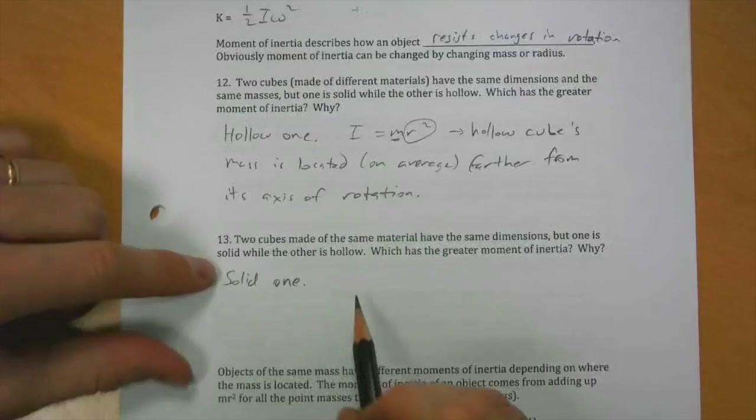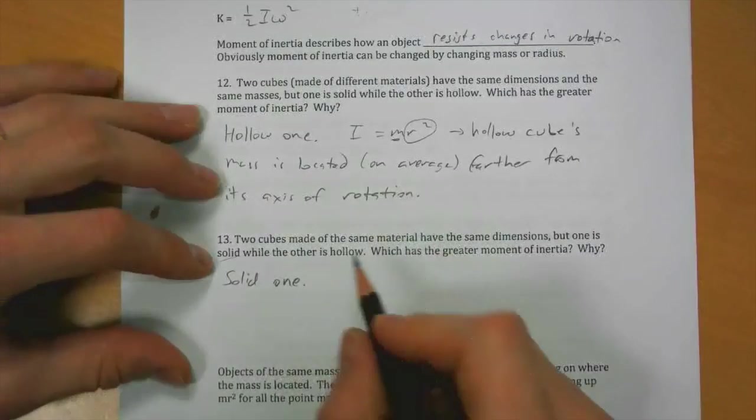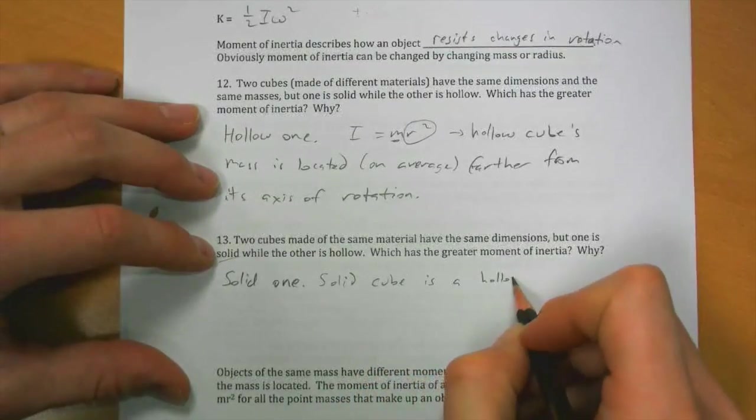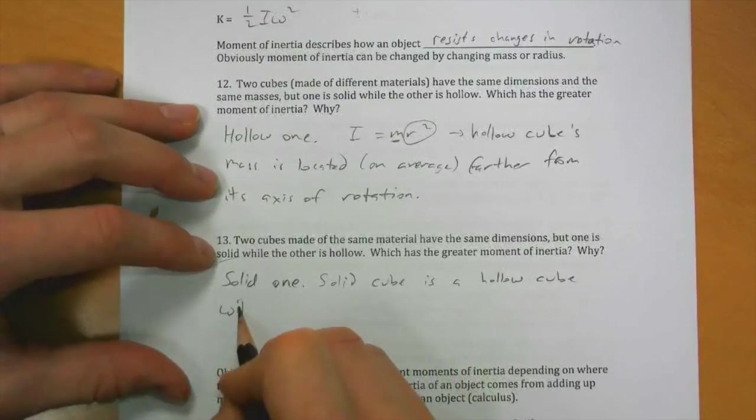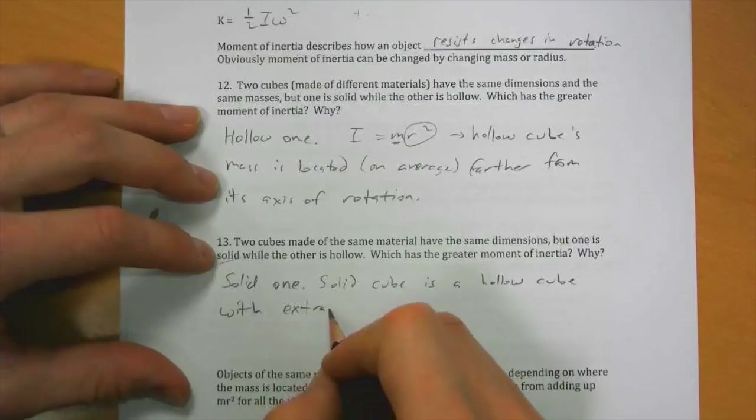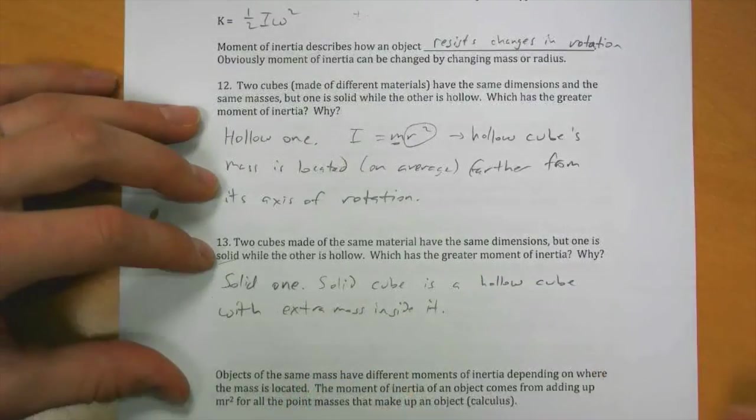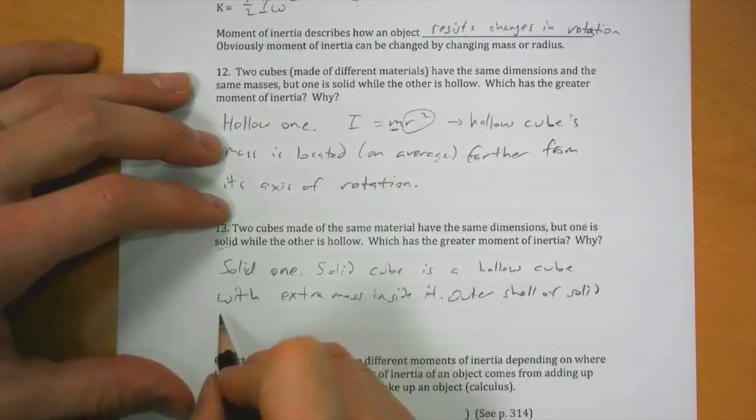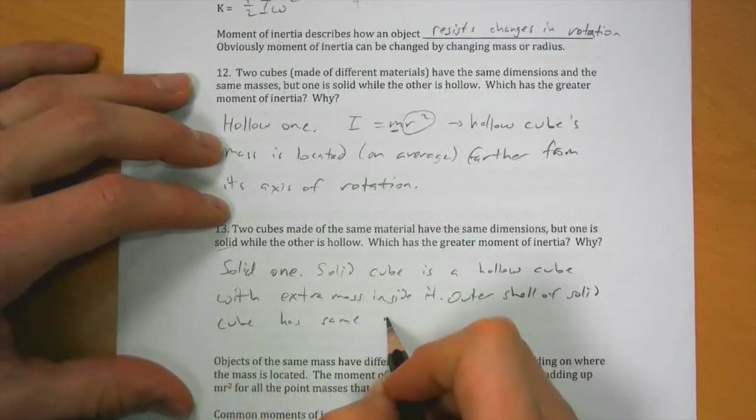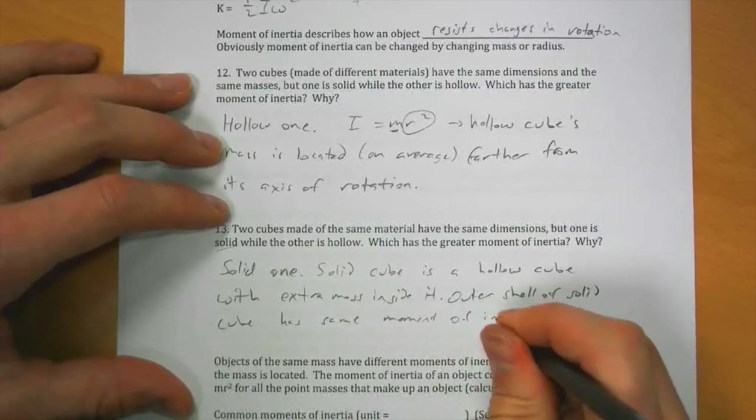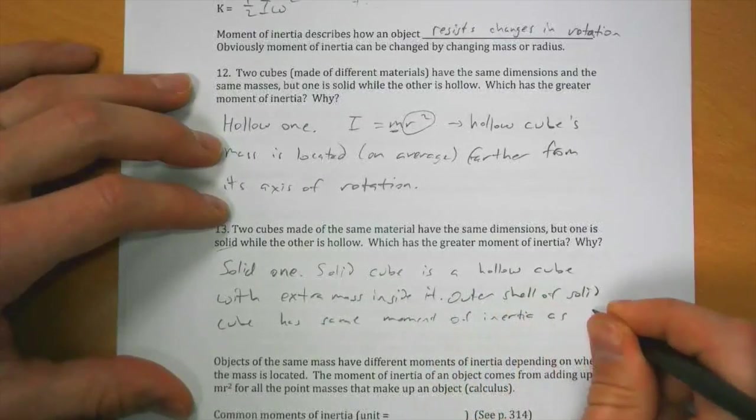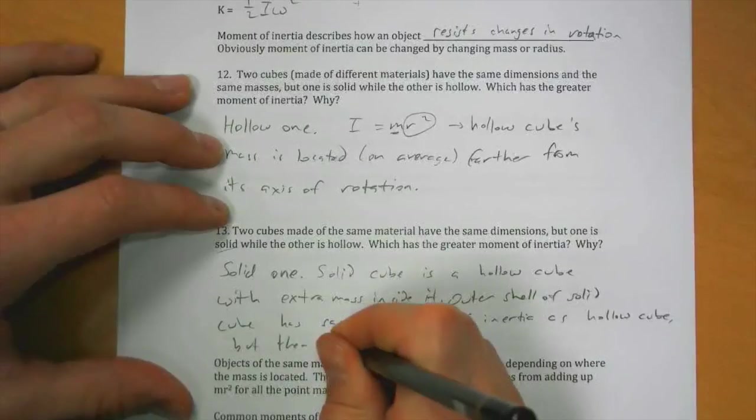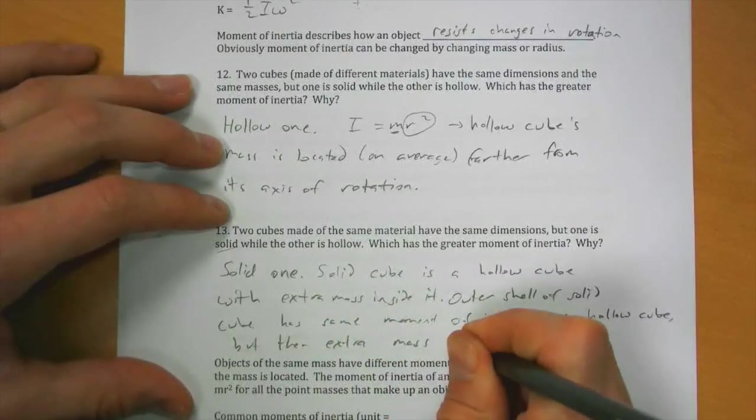Well, consider what is a solid cube? The solid cube is a hollow cube, you can think of it as a hollow cube with extra mass inside it. So then the outer shell of the solid cube has the same moment of inertia as the hollow cube, but then the extra mass fills it.